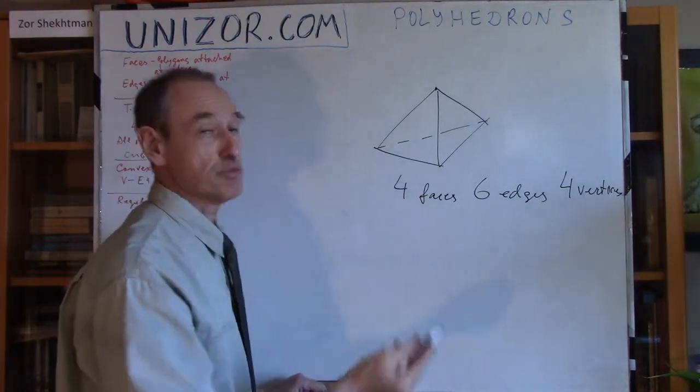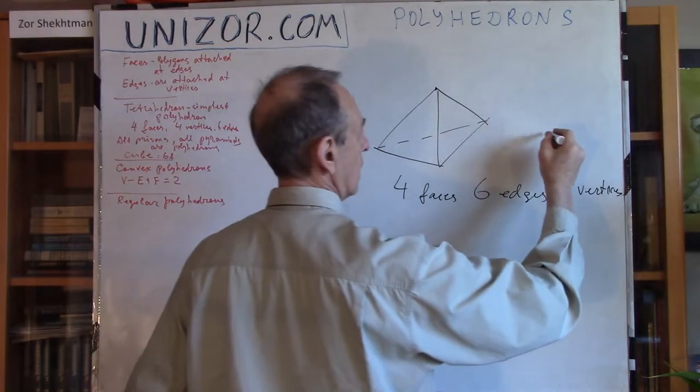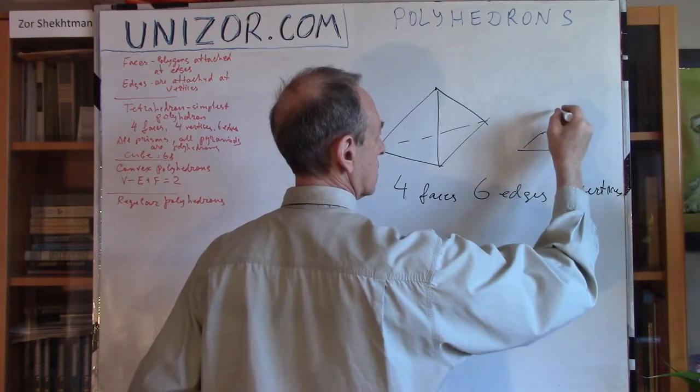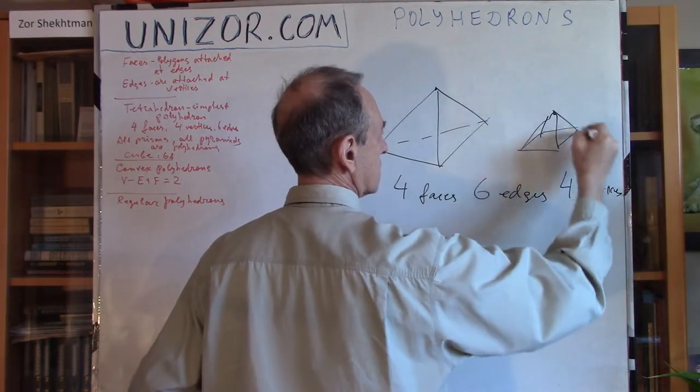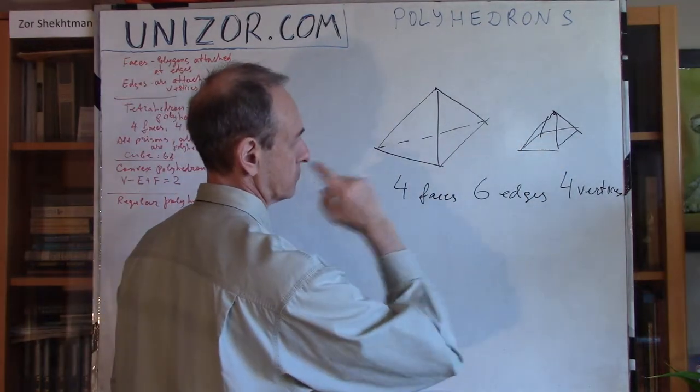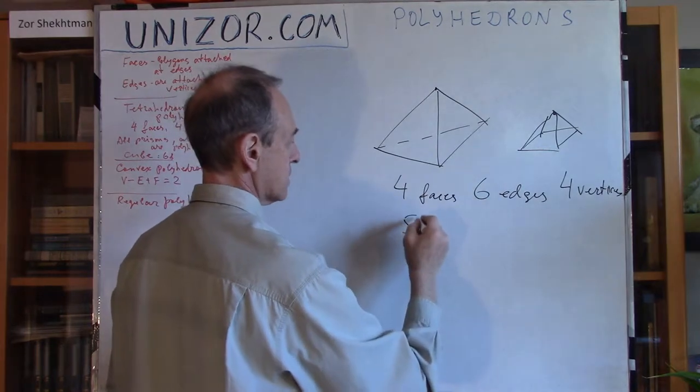Something like an Egyptian pyramid, which has a square as its base. It has four, five, five faces.